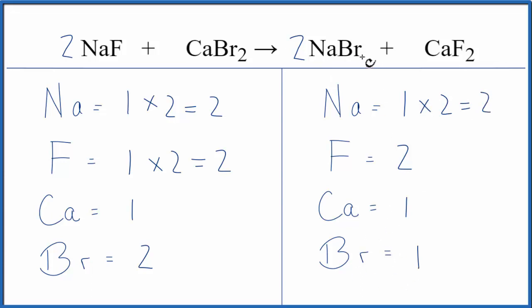The Br, 1 times 2, that gives us 2 Brs, which is what we needed. So now everything on both sides of the equation, it's the same. So this equation is balanced.